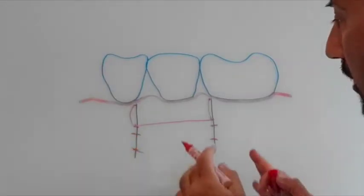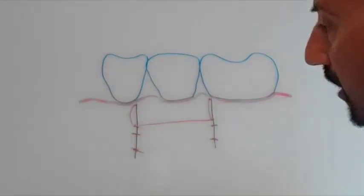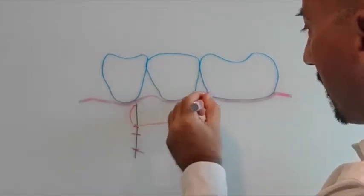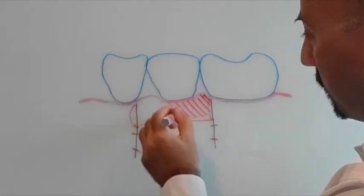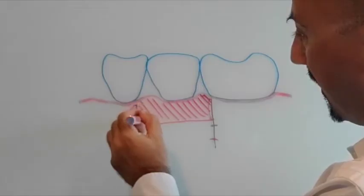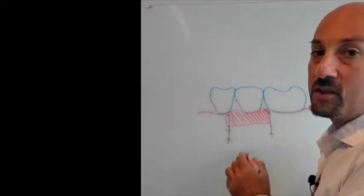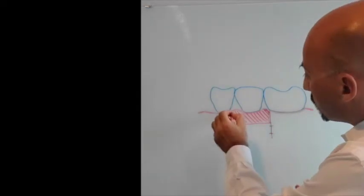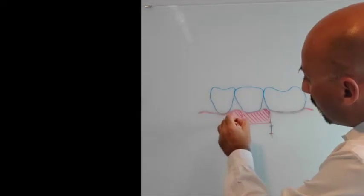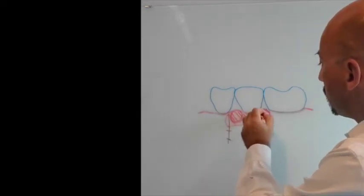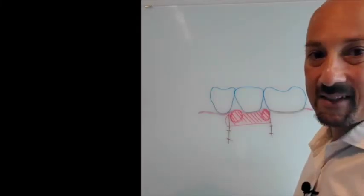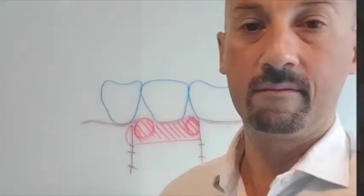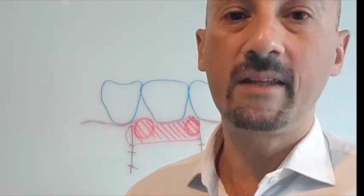So now we actually have repositioned in an apical direction our flap and we have exposed the connective tissue, the periosteum of this area. Now this is why it is important to include the papilla area, the buccal side, because this is where you actually have a bulk of connective tissue that can give you vascularization. This is the most important key for any soft tissue intervention for any augmentation of the soft tissue.